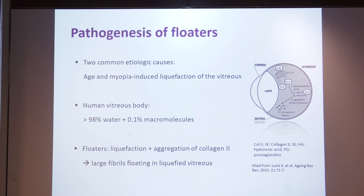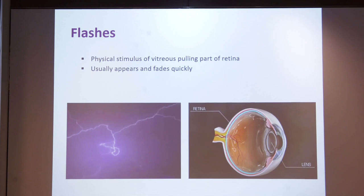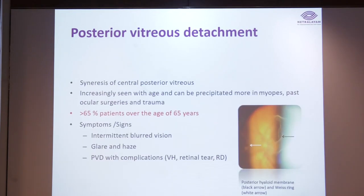The second symptom is flashes — a physical stimulus of vitreous pulling part of the retina. Usually they appear and fade very quickly. We have this pull in the vitreous from the periphery or from the center, causing vitreoretinal traction which causes photopsia or flashes. The actual pathology is posterior vitreous detachment, which causes these symptoms.